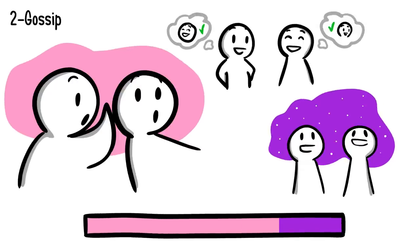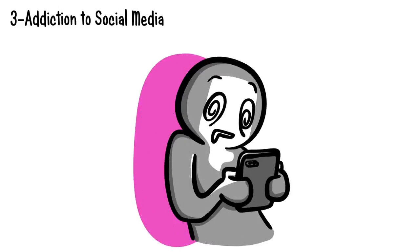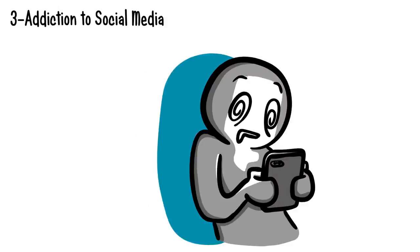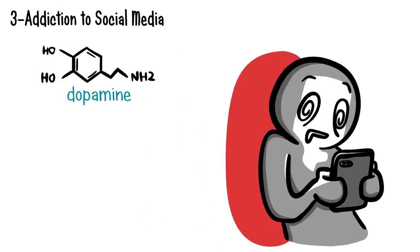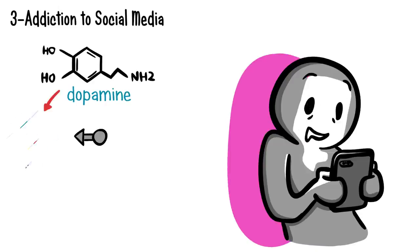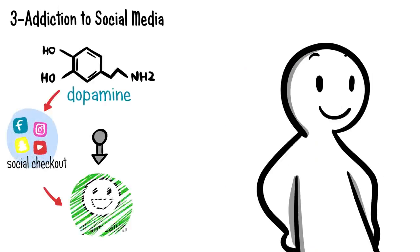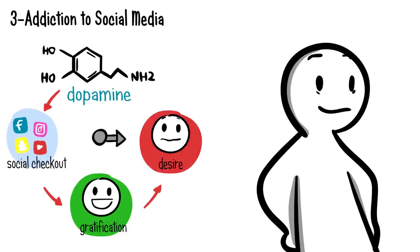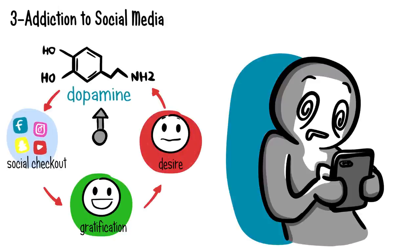Fact number three: addiction to social media. Are you addicted to social media? Some of us continuously check out Instagram and other social pages. Dopamine makes you addicted to seeking information. This is a neurotransmitter in the brain that gives you the desire to constantly look for information. Therefore, you will feel gratified when you browse your feed on social media.